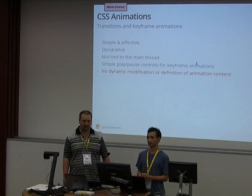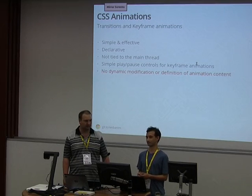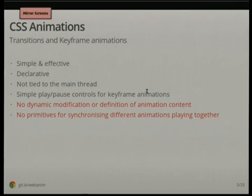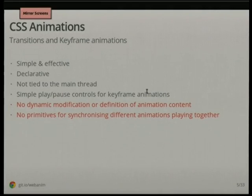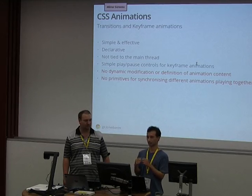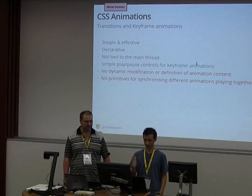There are simple controls for pausing and resuming an animation, but not much more in that department. Once you've set up these transitions or keyframe animations, you can't really modify them anymore. Your best option is to set another style element inside your DOM, which is horrible and hacky and not advised. And there are no primitives for synchronising multiple animations playing together. If you want one keyframe animation to start and then another after, or one starting halfway through, you can't declare that — you'd need to do it manually in JavaScript, detecting when to start and manually changing CSS properties. That's not very declarative.